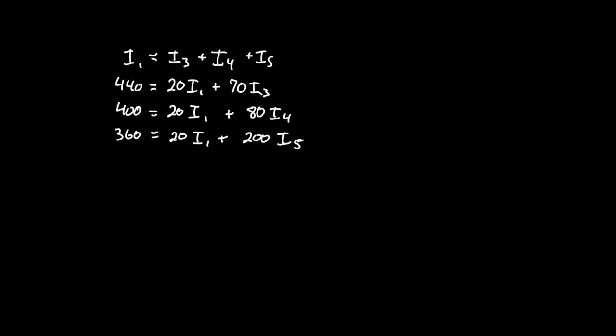First, I'm going to standardize the format for the equations so that I have all the i's on one side with their coefficients and all the constant terms on the other side. So the first one I'll rewrite as i1 minus i3 minus i4 minus i5, and that will equal zero — no constants in this one.